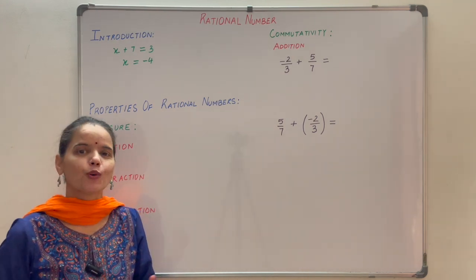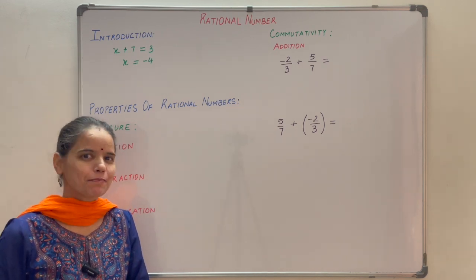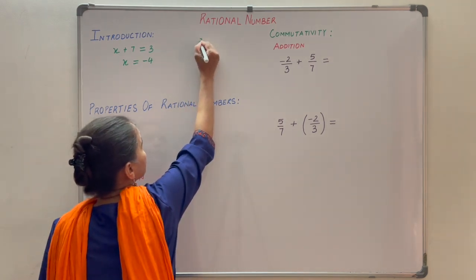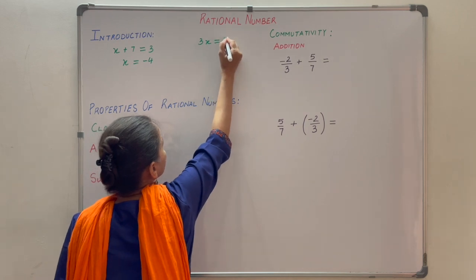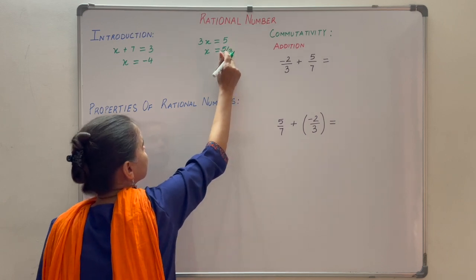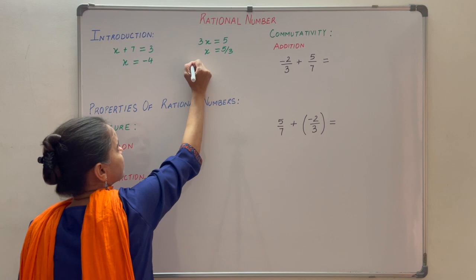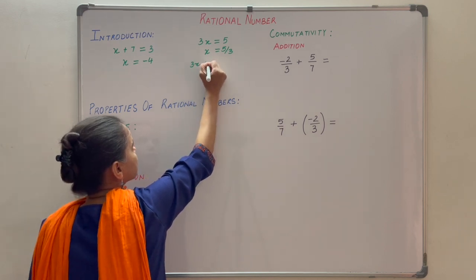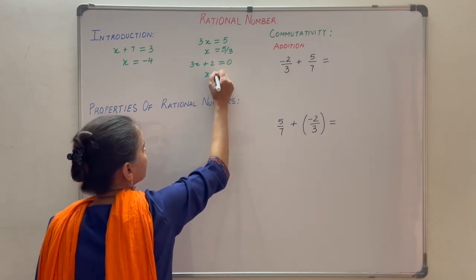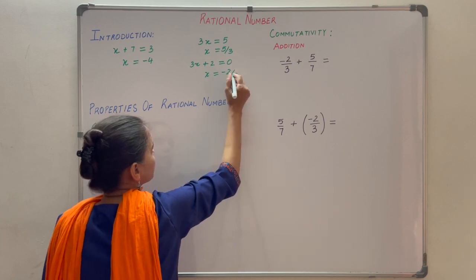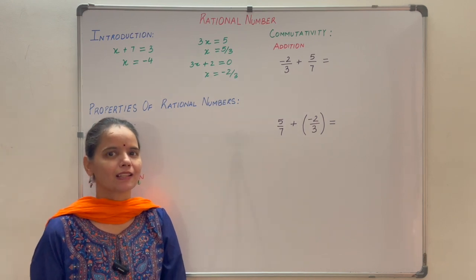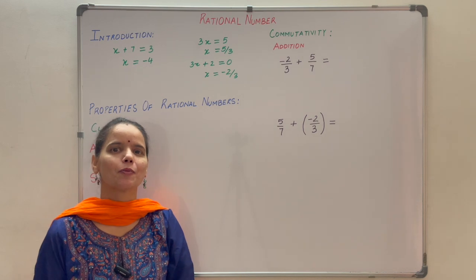Now one may think that you know enough numbers to solve all types of simple equations. Let me write down two more equations. Suppose you have 3x is equal to 5, so x is equal to 5 by 3 — clearly this is not an integer. And 3x plus 2 is equal to 0, so x is equal to minus 2 by 3, which is also not an integer. If you just knew about integers, the solution of these types of equations is not possible.